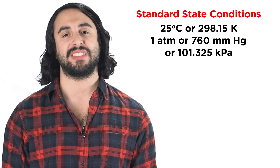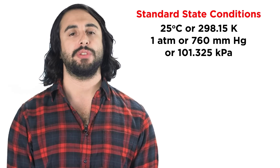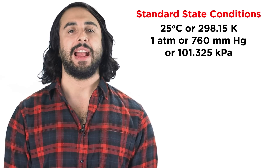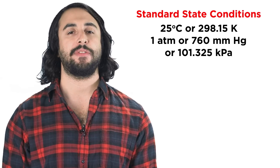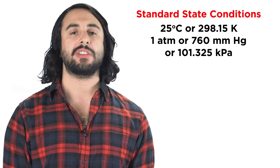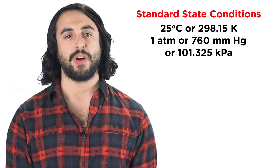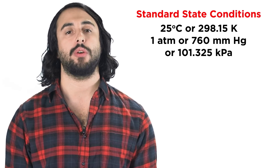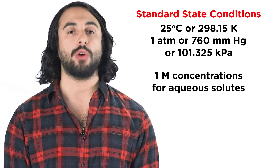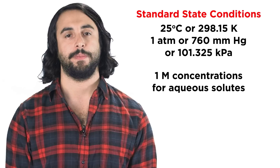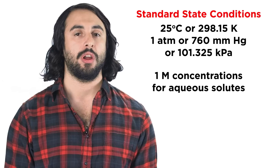Sometimes when people refer to standard conditions, they mean standard state conditions. This includes a temperature of 25 Celsius and a pressure equal to atmospheric pressure at sea level, which by definition is one atmosphere. This can also be expressed as 760 millimeters mercury, or 101.325 kilopascals, which is extremely close to the pressure previously discussed for STP. Standard state conditions can also refer to concentration — more specifically to solution concentrations of precisely one molar for any solute.